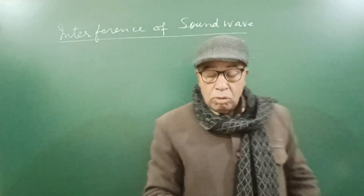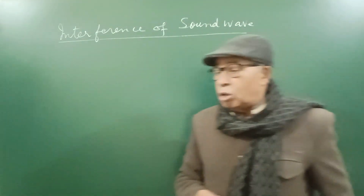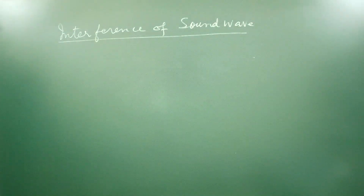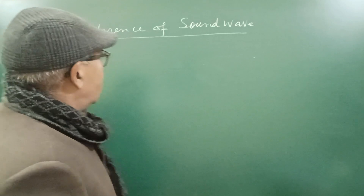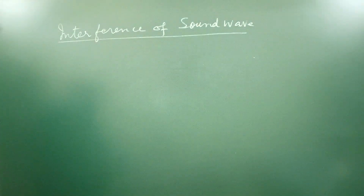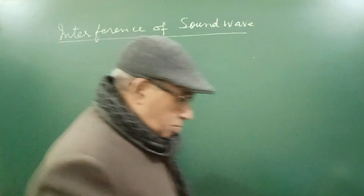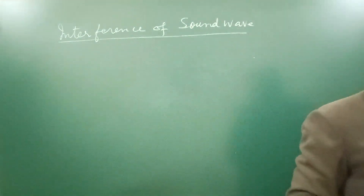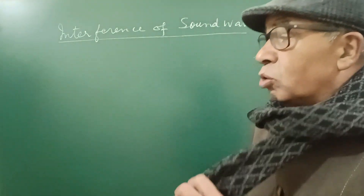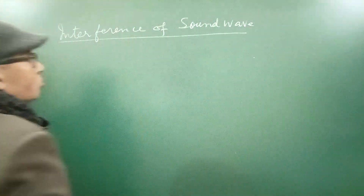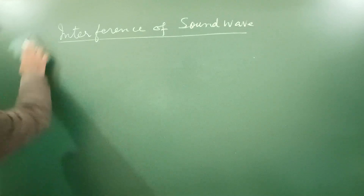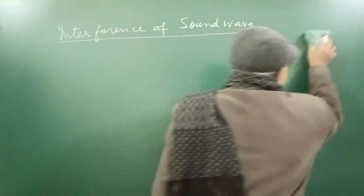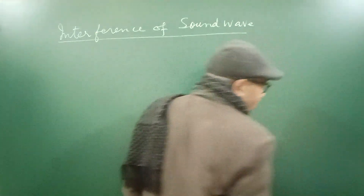Dear friends, now I'll take up interference of sound waves. I told you this topic had been deleted from the syllabus of class 11, but without understanding interference you can't understand beats, and you can't understand what is the meaning of superposition of waves. Actually, interference of sound is produced by superposition of two waves. So I will first write qualitatively what interference is, and then take it mathematically.